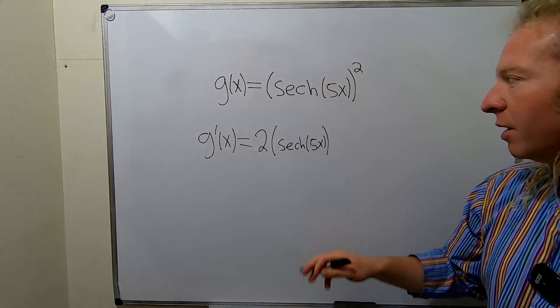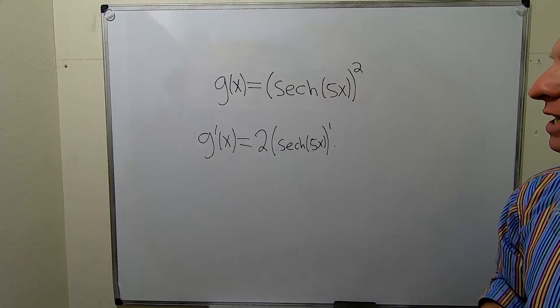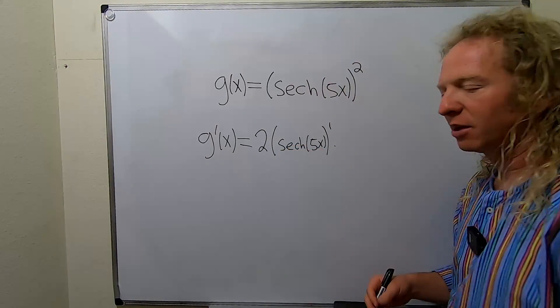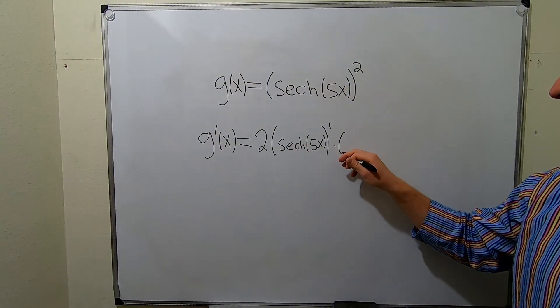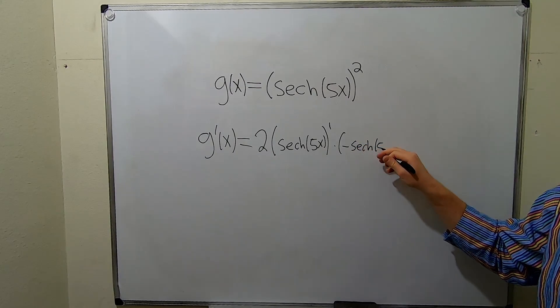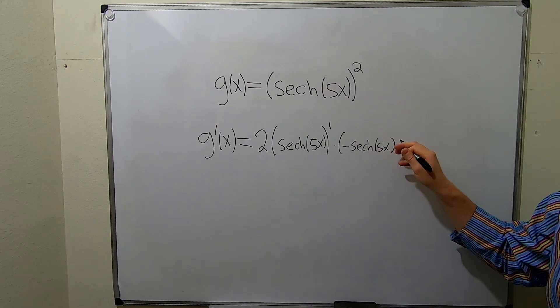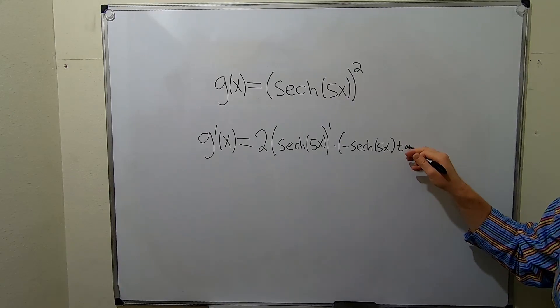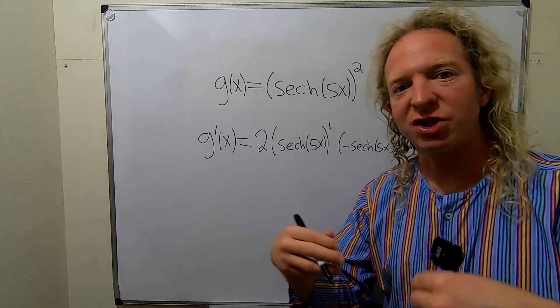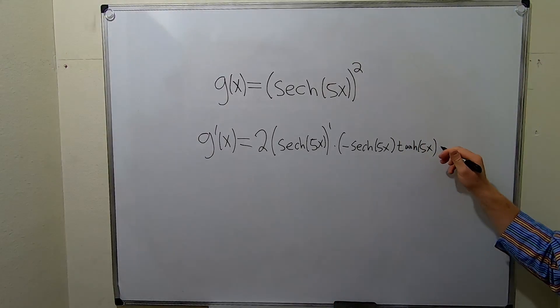So 2 minus 1 is 1 times the derivative of the inside function. So your inside function here is the hyperbolic secant. So its derivative is negative hyperbolic secant of 5x, hyperbolic tangent of 5x, times the derivative of the inside chain rule again. It's like a double chain rule.